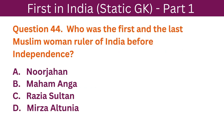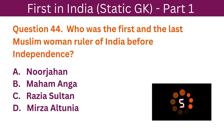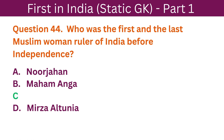Question 44: Who was the first and the last Muslim woman ruler of India before independence? A. Nur Jahan. B. Maham Anga. C. Razia Sultan. D. Mirza Altyunia. The correct answer is C. Razia Sultan.